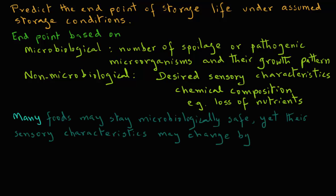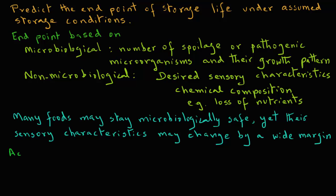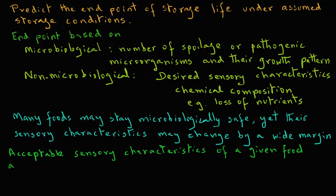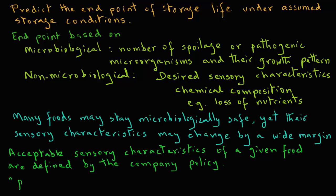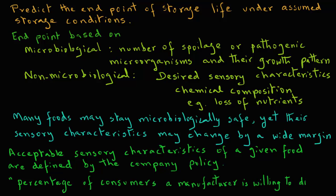Many foods may stay microbiologically safe, yet their sensory characteristics may change by a wide margin and may not be tolerated by consumers. The acceptable sensory characteristics of a given food are usually defined by company policy. Some have referred to this exercise as the percentage of consumers a manufacturer is willing to displace.